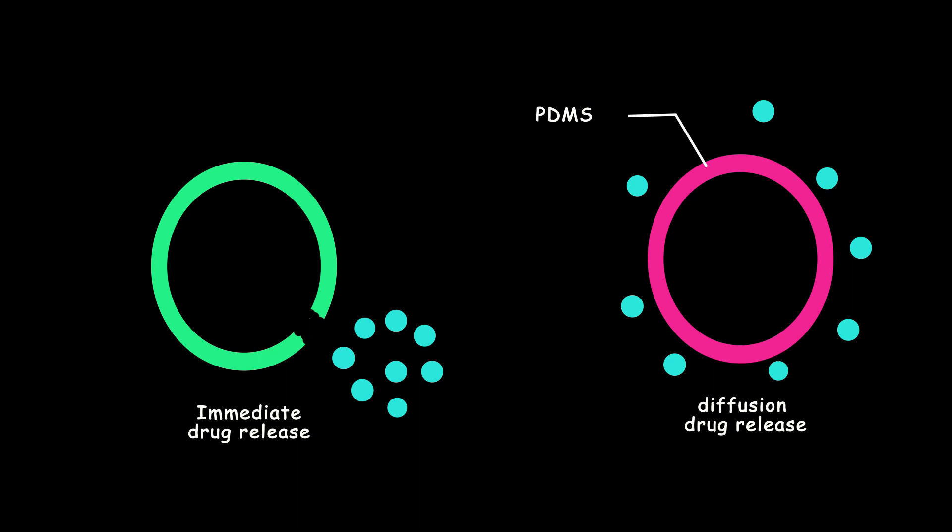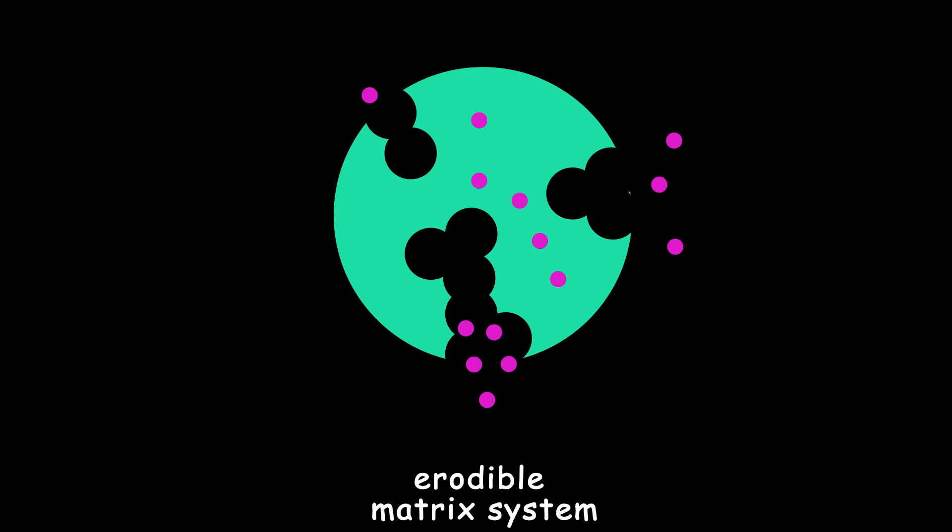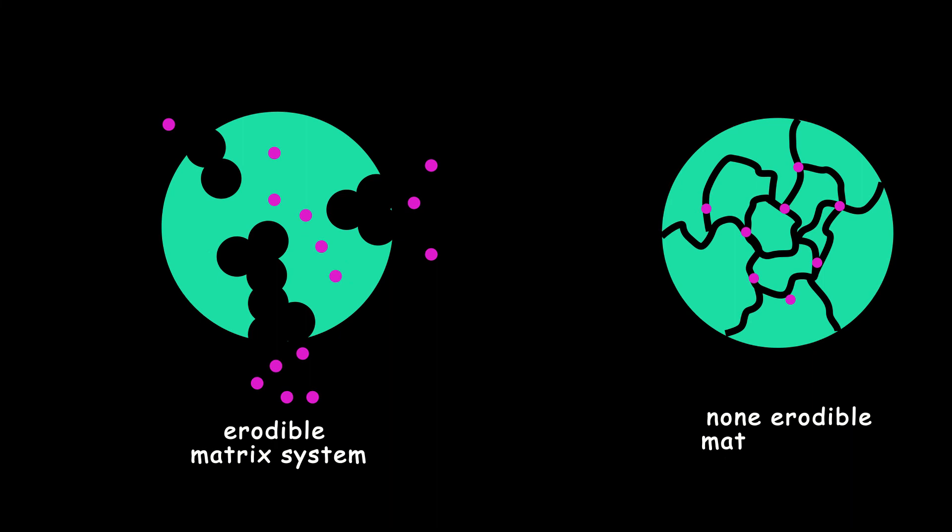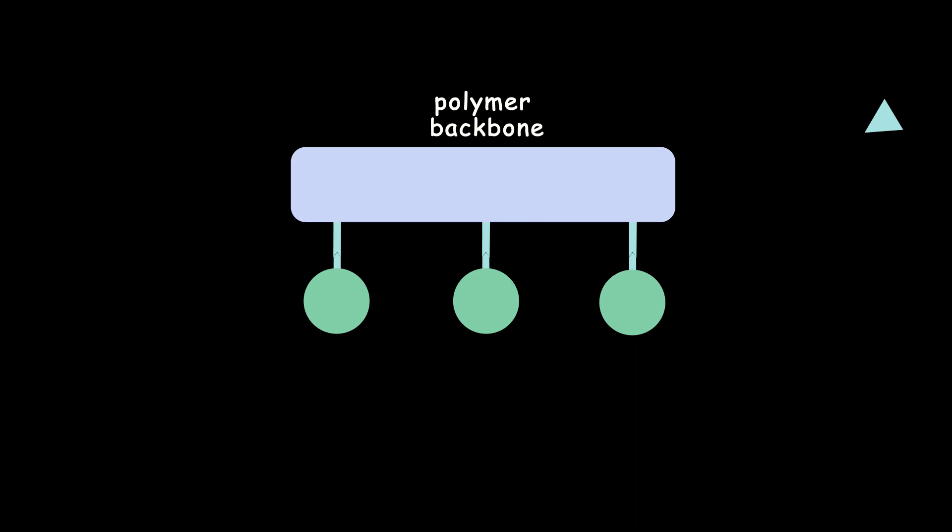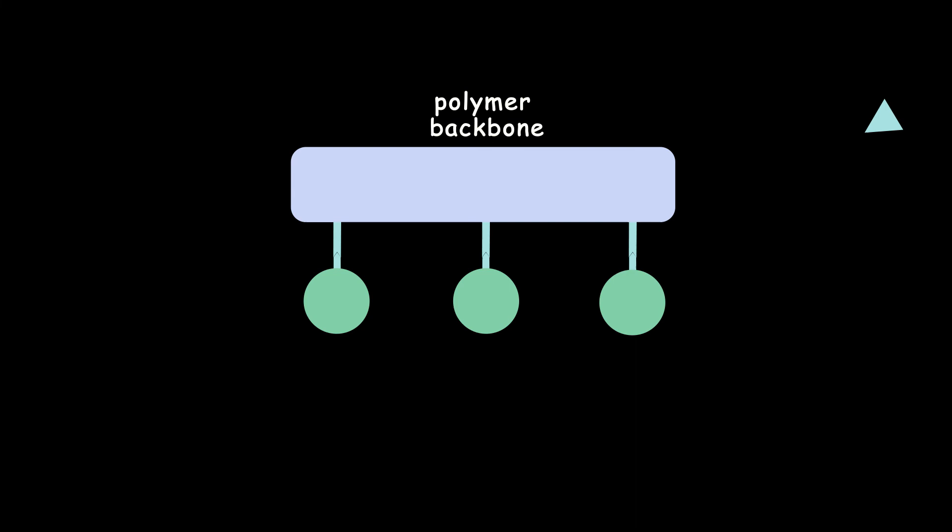Another way we can make a matrix system in which we can disperse the drug with the polymer. Now if our polymer is erodible, the drug would release when the polymer dissolves. But if the polymer is non-erodible, the drug can diffuse from channels or through a matrix mesh. In some cases, we can attach the drug with a polymer backbone, and the drug can be released with the help of specific enzymes.